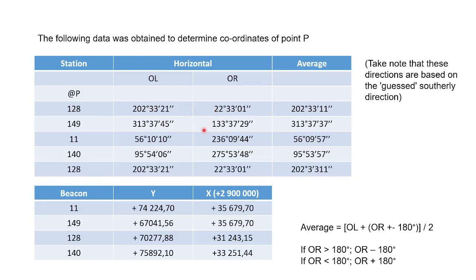I'll explain to you now why we use the southerly direction. You take your circle lefts and get closest to the average of the circle left. Your circle right should be plus or minus 180 degrees from your circle left. To get the average, you say circle left plus circle right plus or minus 180 degrees. When it's bigger than 180, you say minus 180 degrees; if smaller than 180, you say plus 180 degrees. Add those two values together and divide by two to get your average.